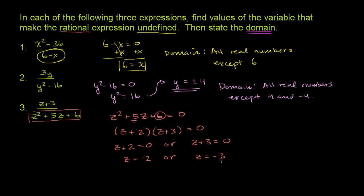So if z is negative 2 or z is negative 3, this denominator will become 0. Even though for z equal to negative 3, you get 0 over 0. But this denominator will become 0. And the expression is undefined. So the domain here is all real numbers except negative 2 and negative 3. These two will make it undefined. Any other number, you'll get a valid result.